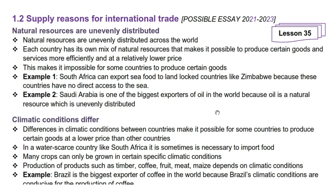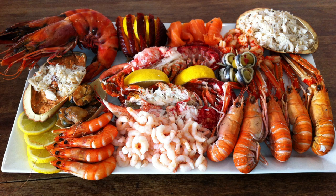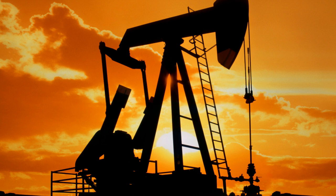Let us now look at supply reasons for international trade. The first is that natural resources are unevenly distributed across the world. Each country has its own mix of natural resources that makes it possible to produce certain goods more efficiently and at a relatively lower price. For example, South Africa can export seafood to landlocked countries like Zimbabwe, and Saudi Arabia is one of the biggest exporters of oil because oil is a natural resource which is unevenly distributed.